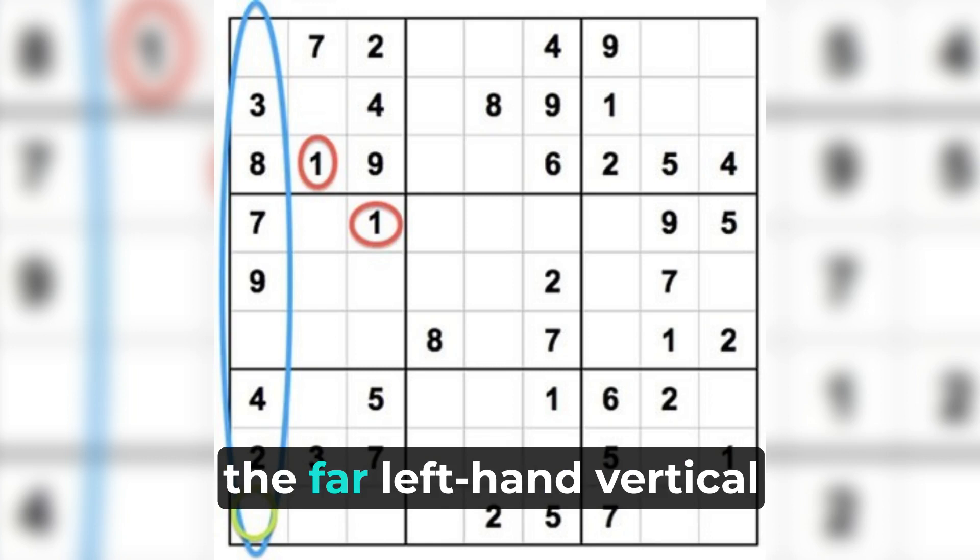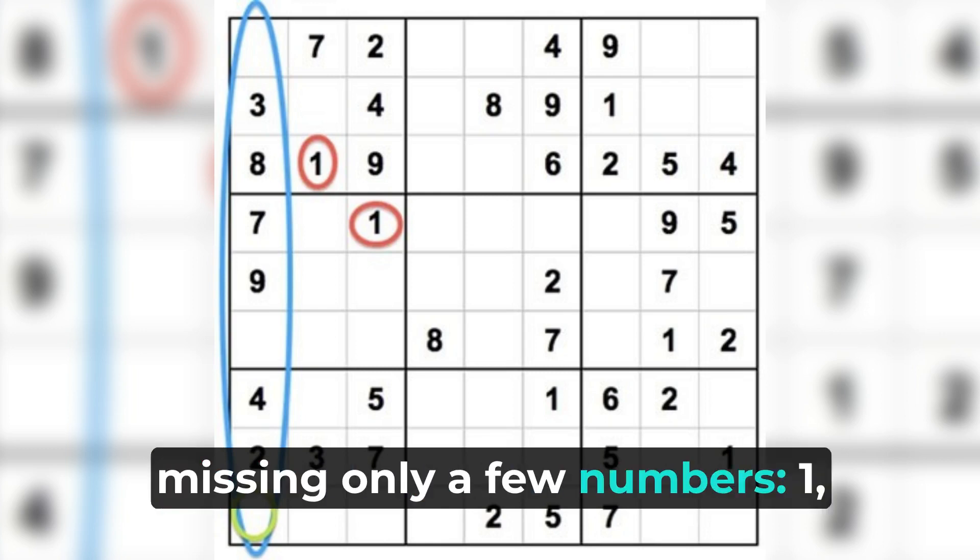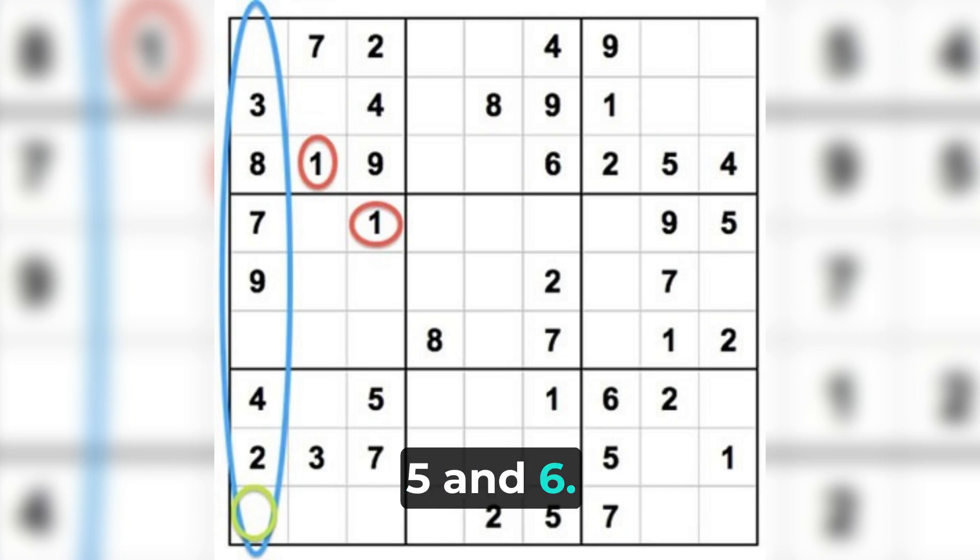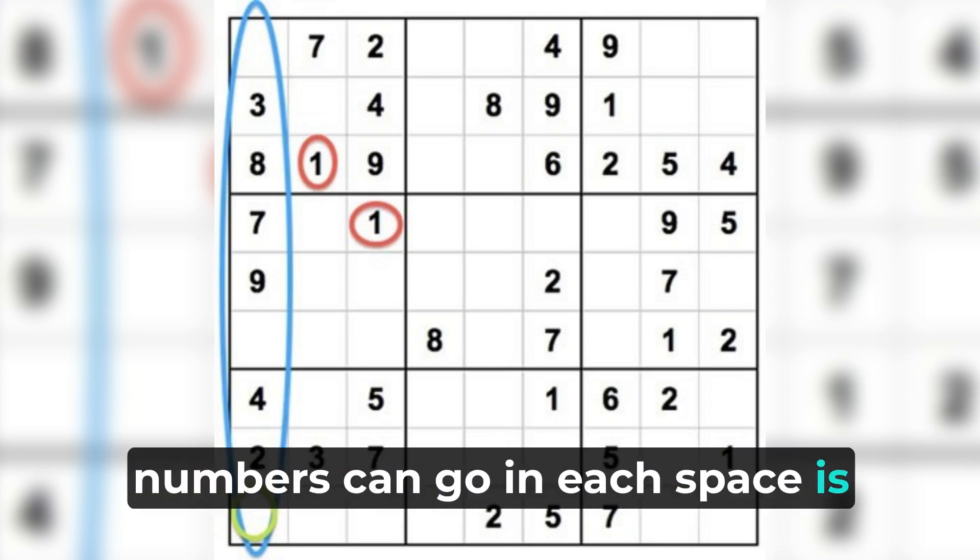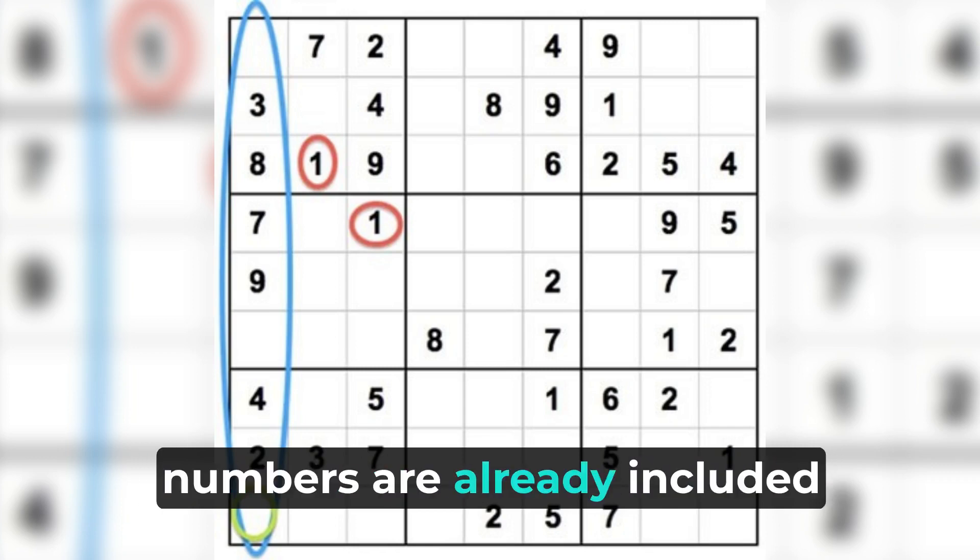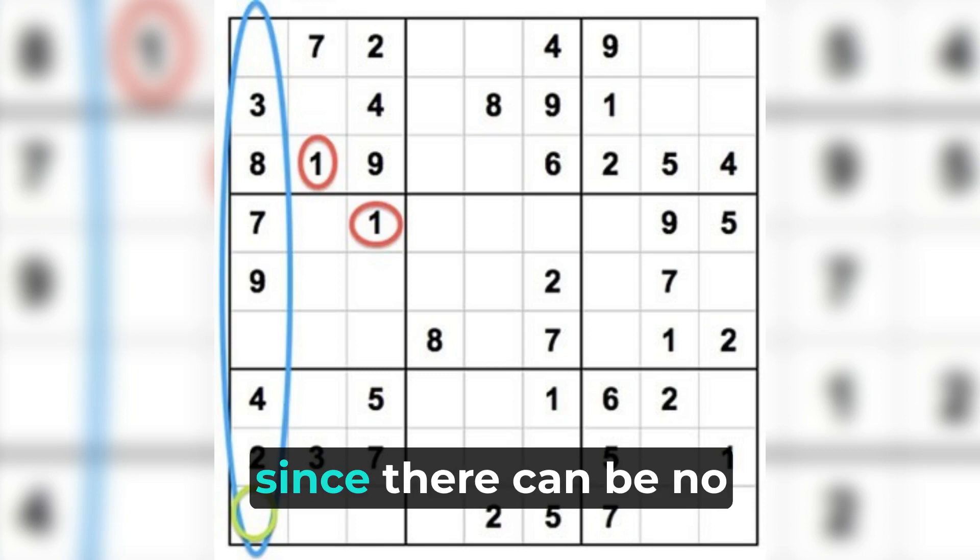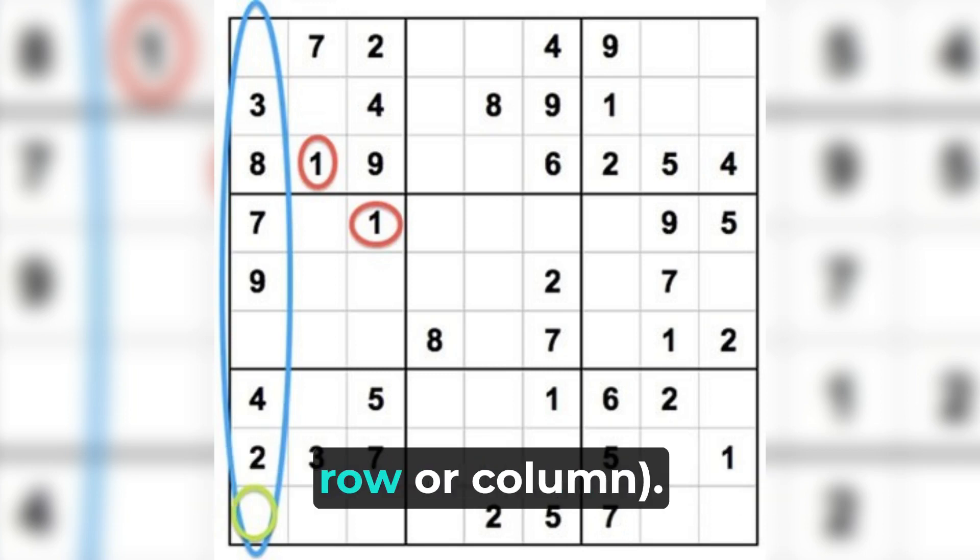In this Sudoku below, the far left-hand vertical column, circled in blue, is missing only a few numbers: one, five, and six. One way to figure out which numbers can go in each space is to use process of elimination by checking to see which other numbers are already included within each square, since there can be no duplication of numbers one to nine within each square or row or column.